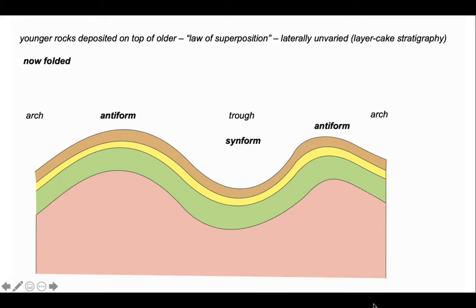But we built this stratigraphy so we know where the older rocks and the younger rocks are. The rocks are the right way up so that they young upwards. So our antiform has older rocks in the core. This means we can give it a different name, we can call it an anticline. And the opposite situation, where younger rocks are in the core, we have a syncline.